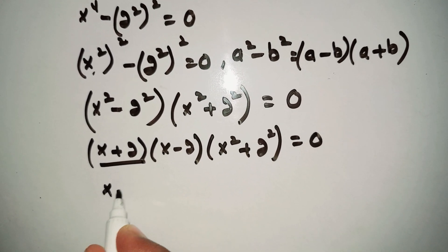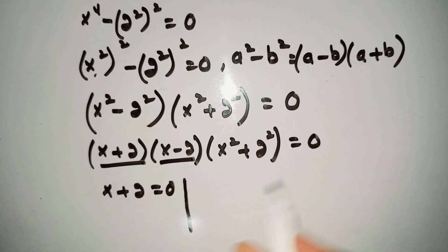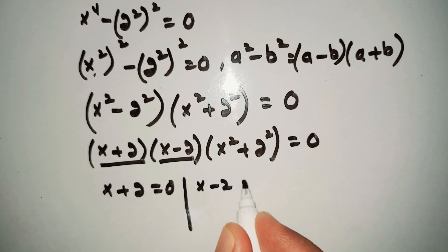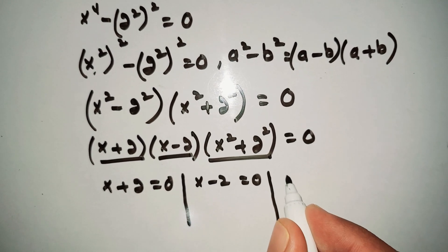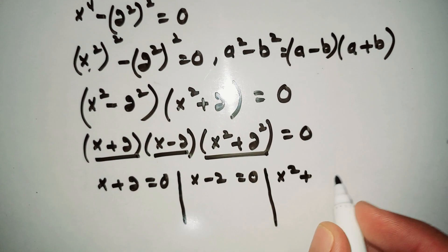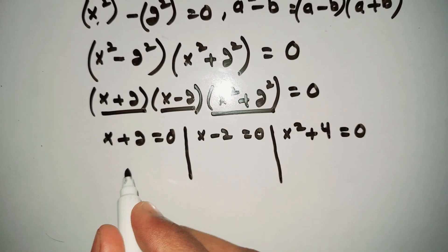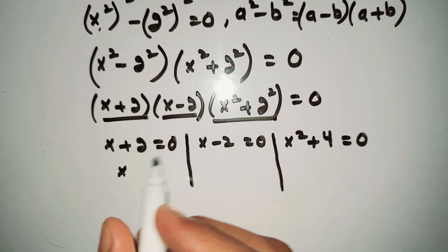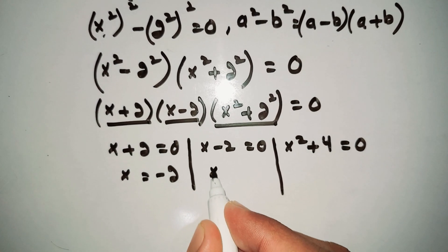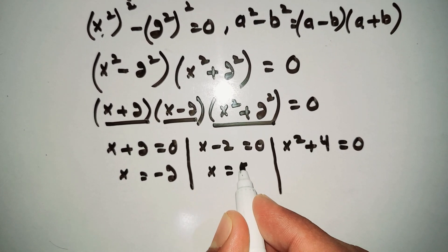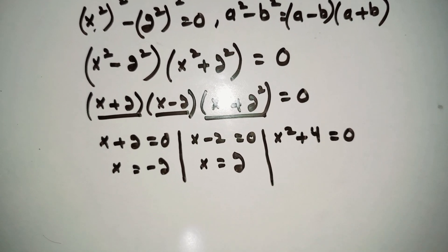Setting each factor equal to zero: x + 2 = 0 gives x = -2, and x - 2 = 0 gives x = 2. So the two real values of x are -2 and 2. Now we find the other two values from x² + 4 = 0.